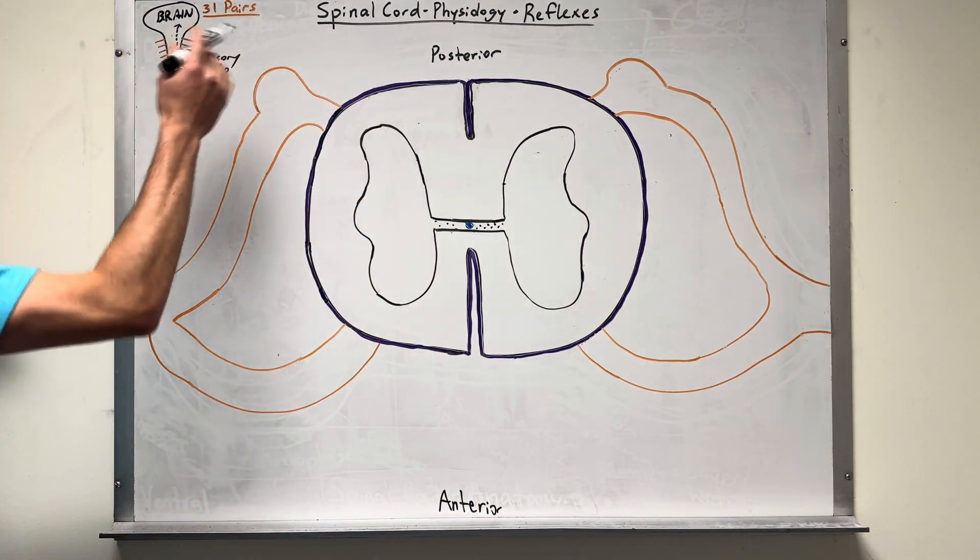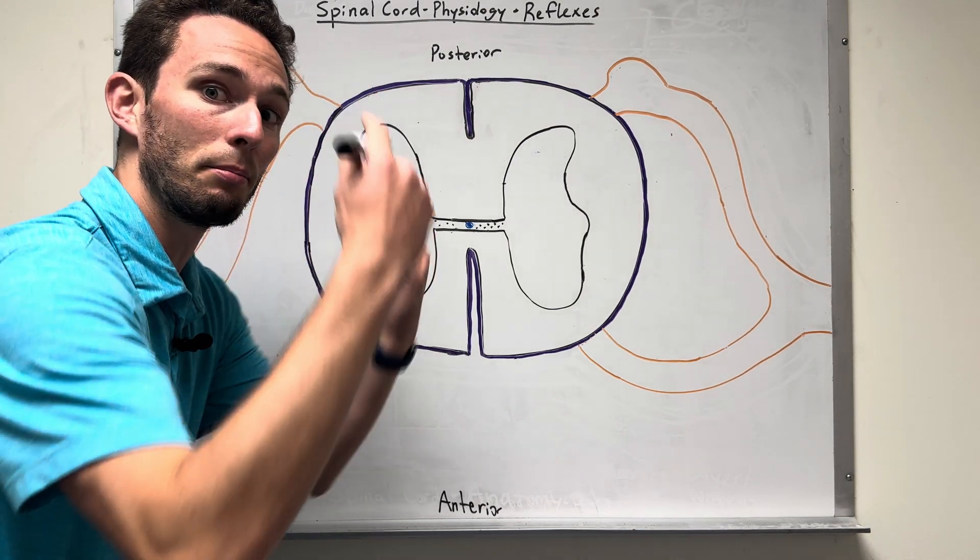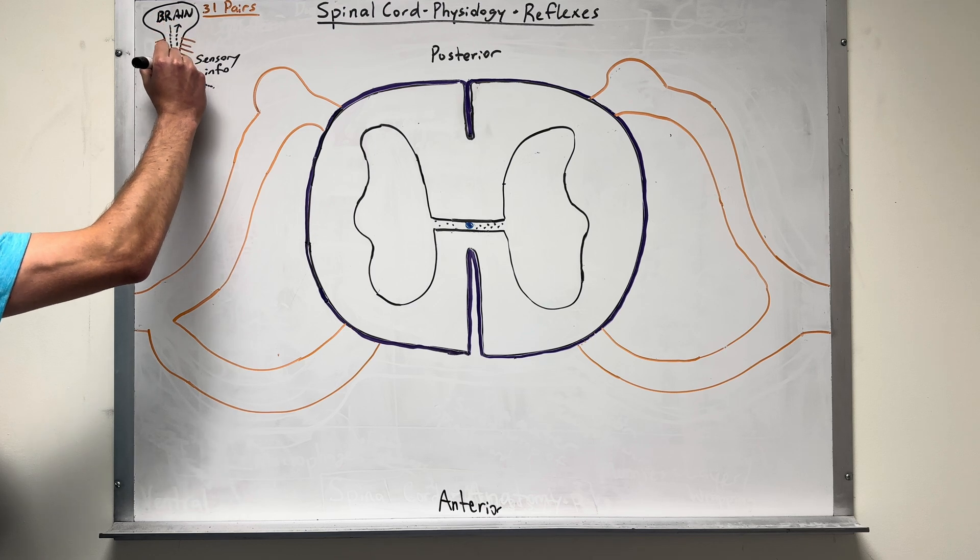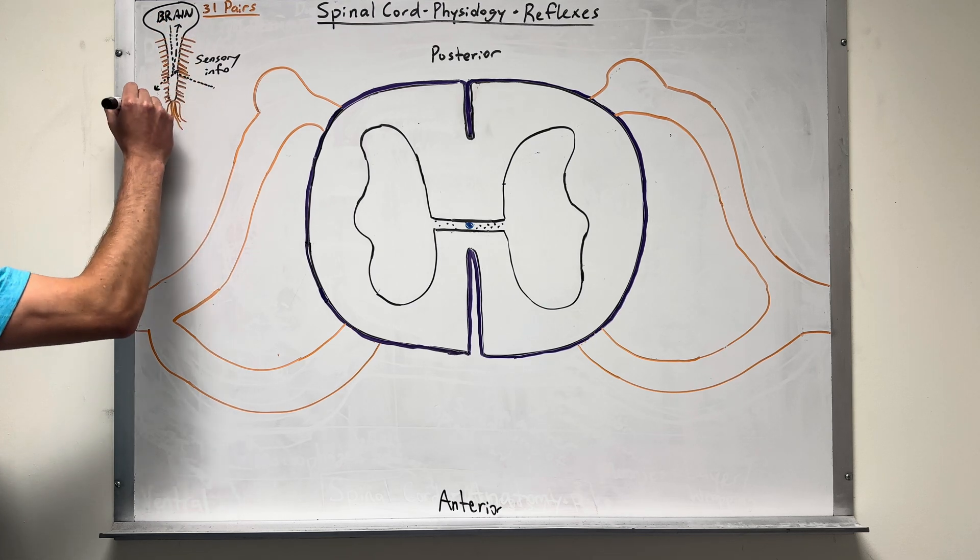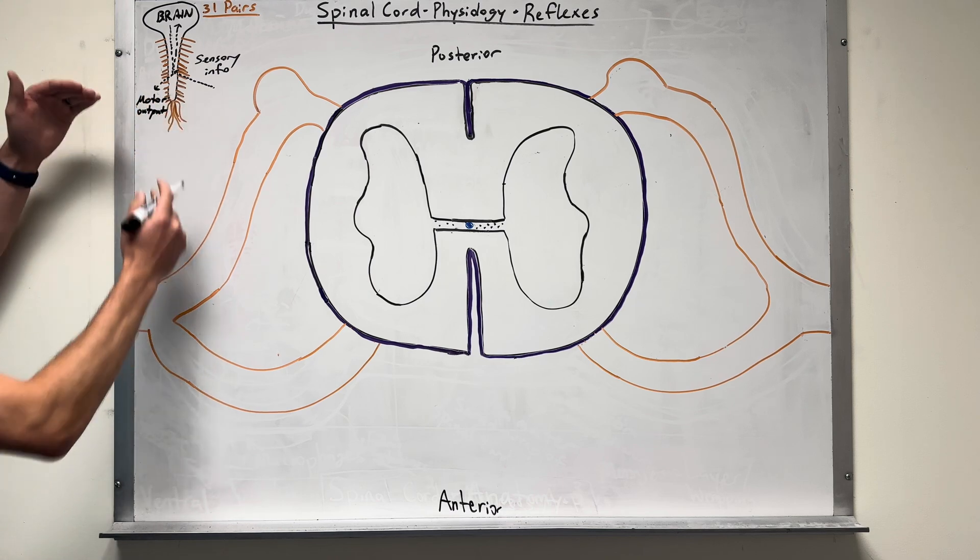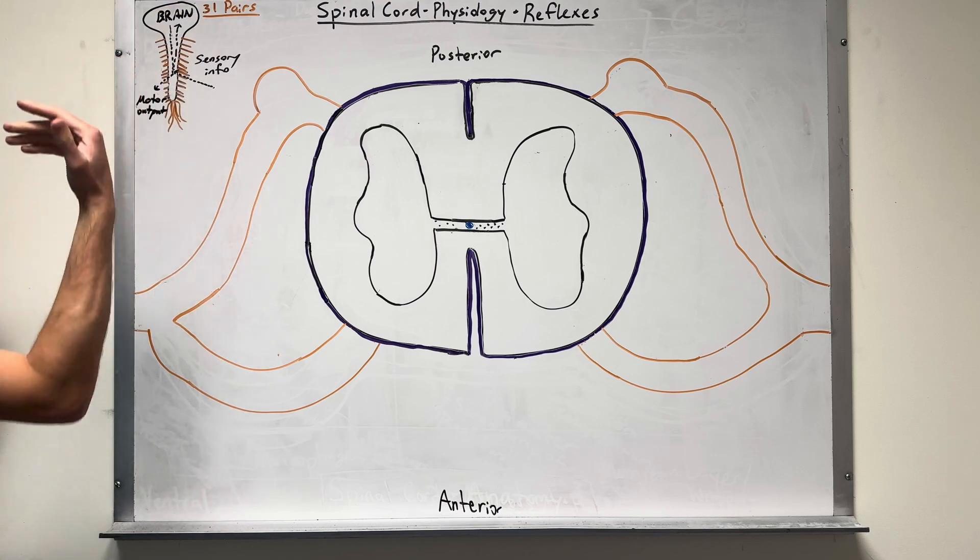But at the same time, if you want to move a muscle, we need that information to originate in the brain. In that case, we go down from the brain and then out through spinal nerve, and that will be motor output. So that's how the spinal cord is kind of an elevator. If we're going in and up, sensory, down and out, motor.